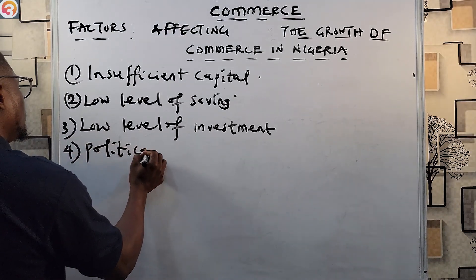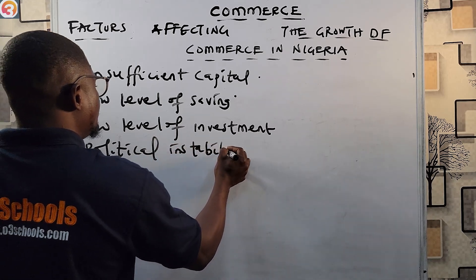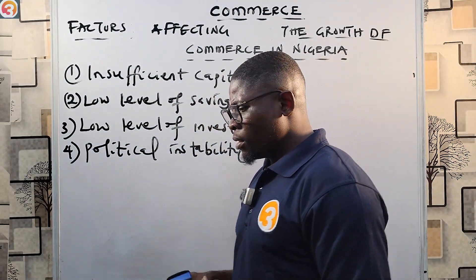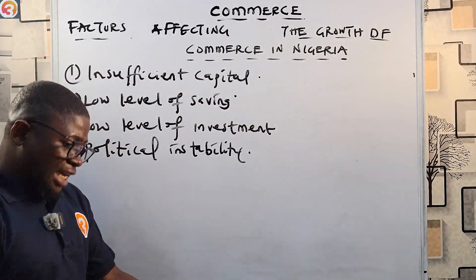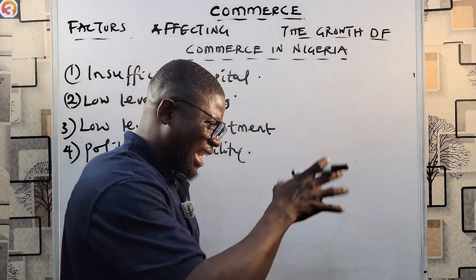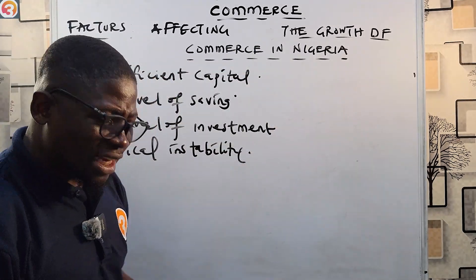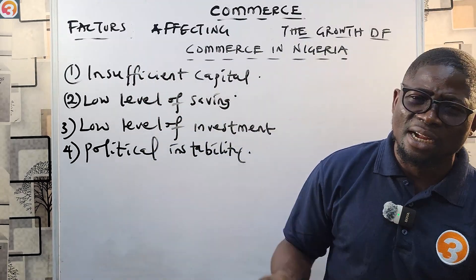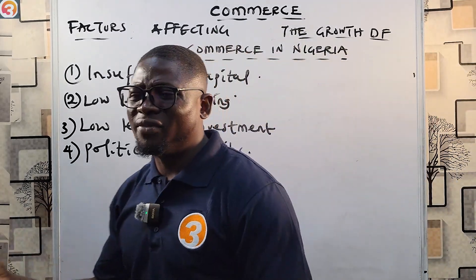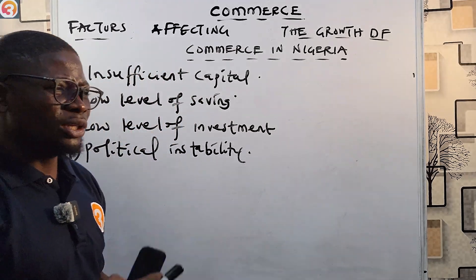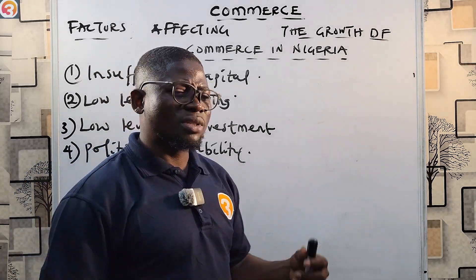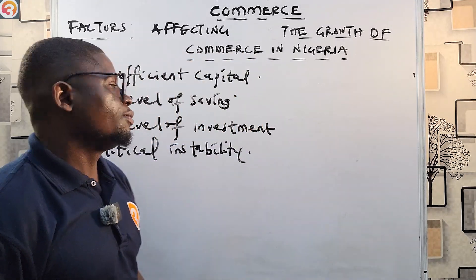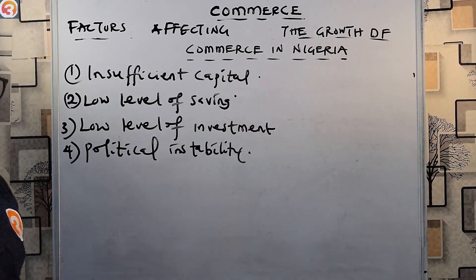Number four is political instability. All these changes of government create a problem of no continuity — one governor comes in and wants to start something different, not building on what his predecessor did. One president finishes and another starts with different ideas and different parties, creating too many governance issues. Leaders fight each other, and a governor facing too many troubles cannot concentrate on the work he is supposed to do. Political instability is affecting the growth of commerce in Nigeria.